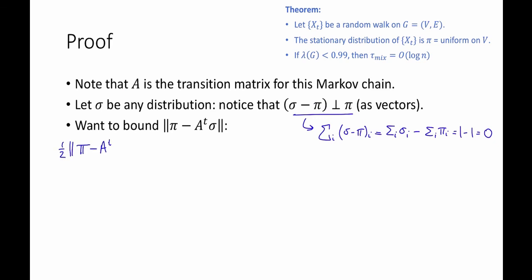So let's write it like this. And here I'm thinking of the L1 distance of this thing as a vector. Now by the Cauchy-Schwartz inequality, this is at most the square root of n divided by 2 times the L2 distance between those two vectors.